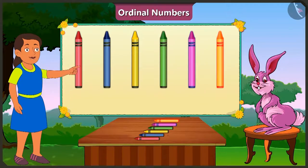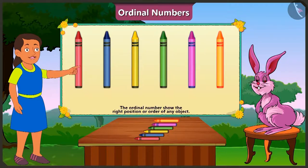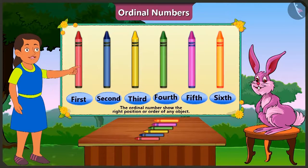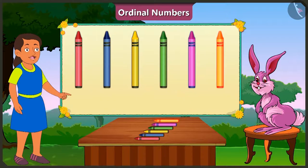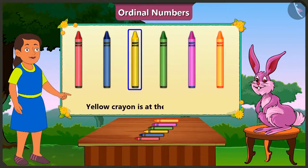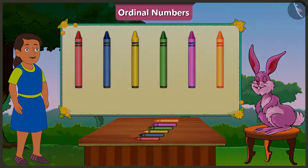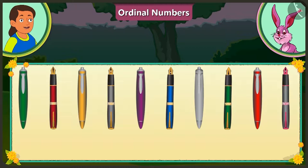If we want to count objects, we say one, two, three. Got it? And if we have to tell the position or place of objects in a line, then we say first, second, third — those are ordinal numbers. So the yellow crayon is at the third position, and at the end is the orange crayon. Absolutely right, Bubbly!